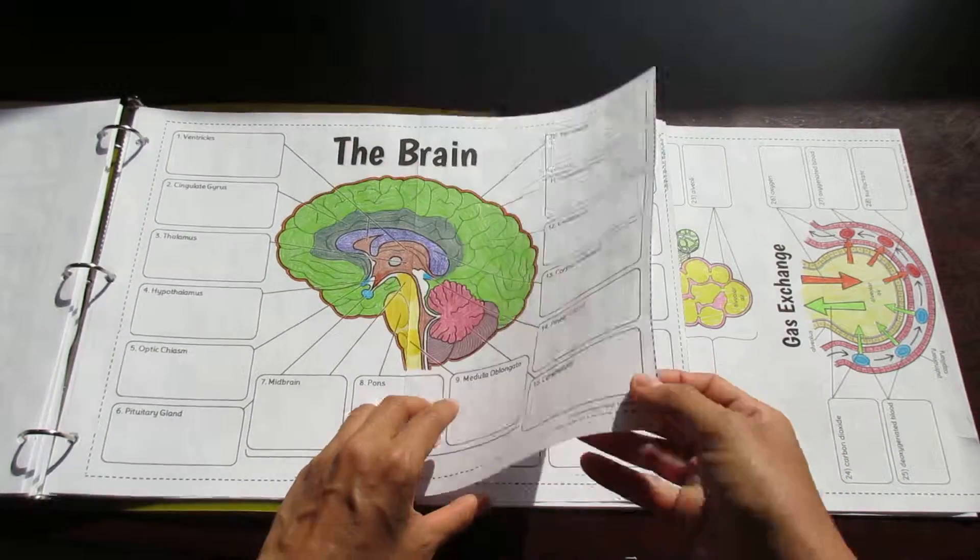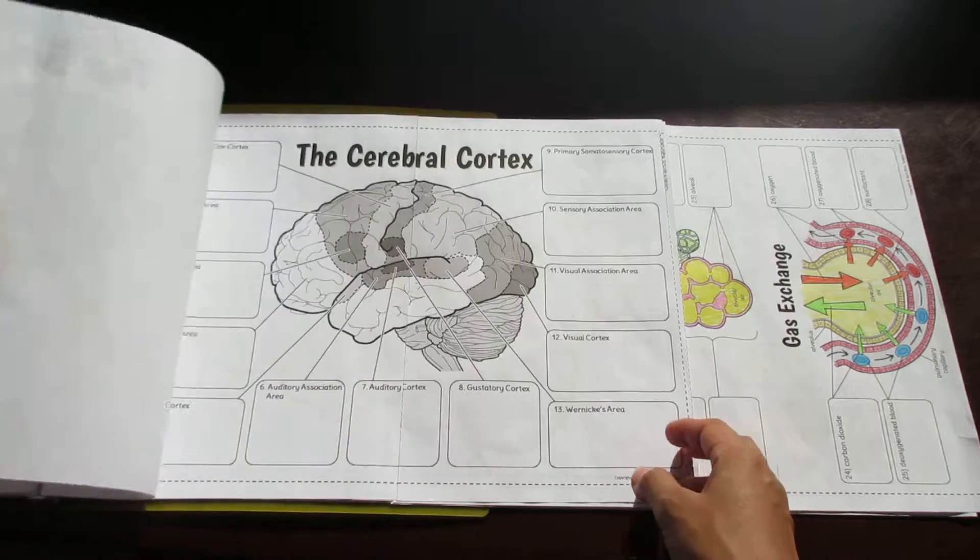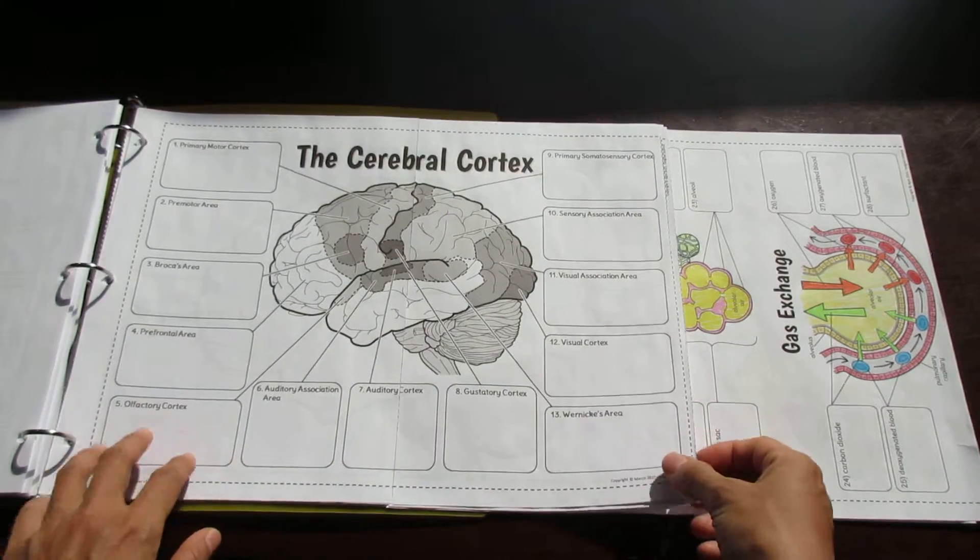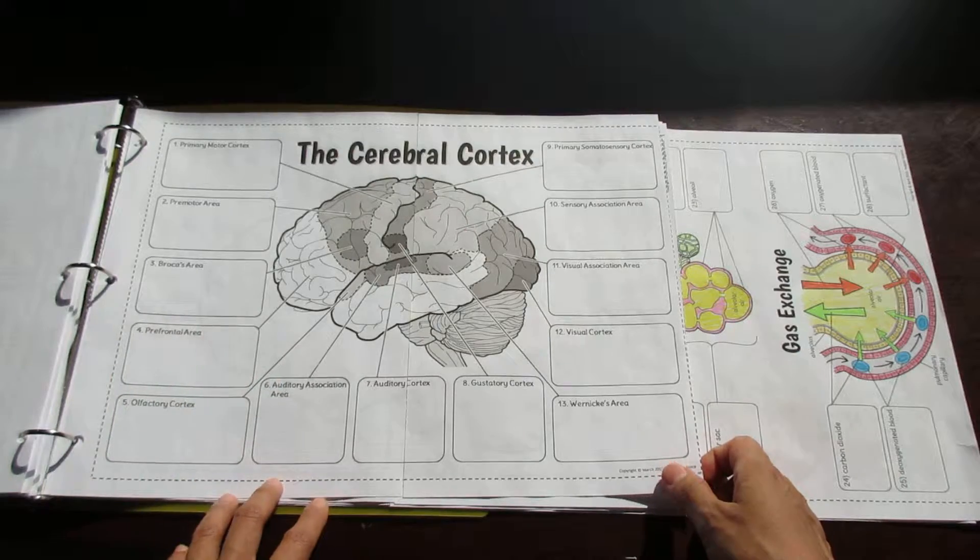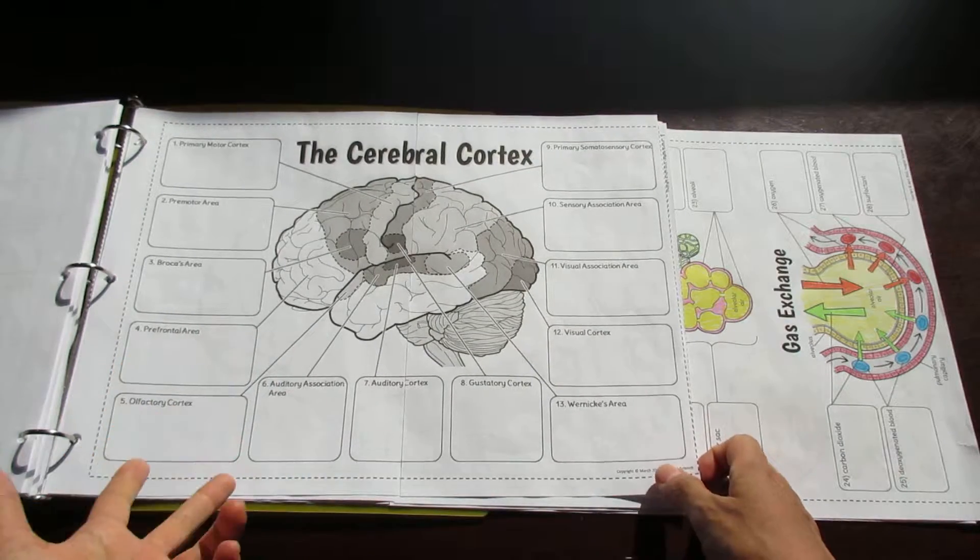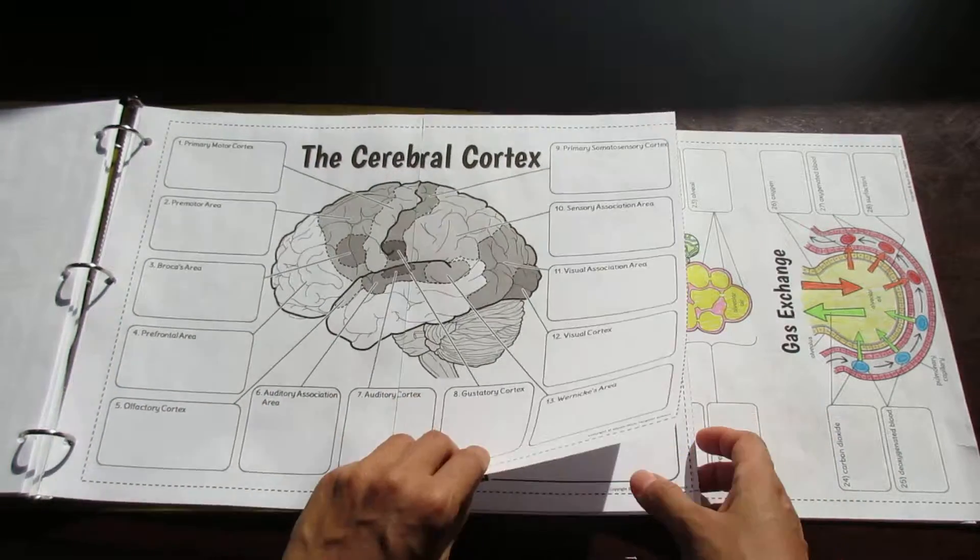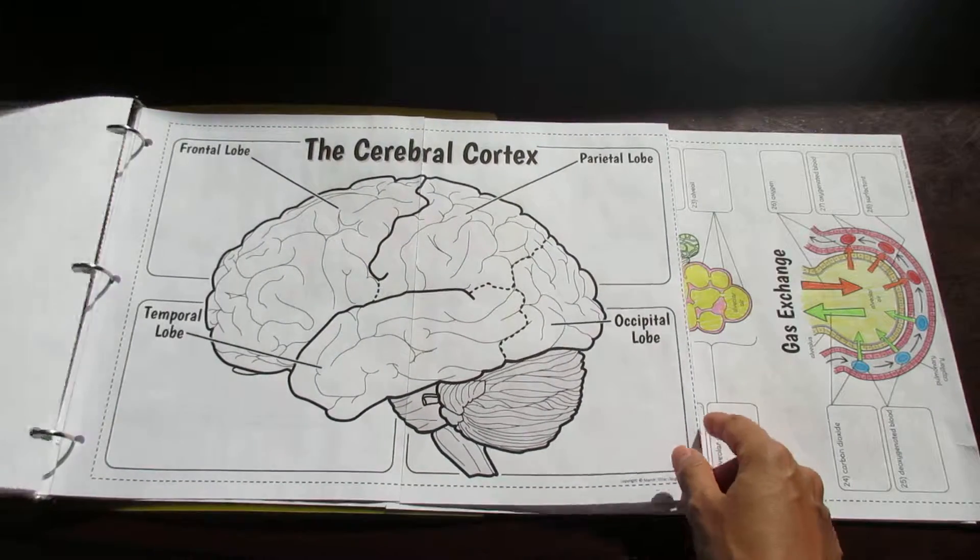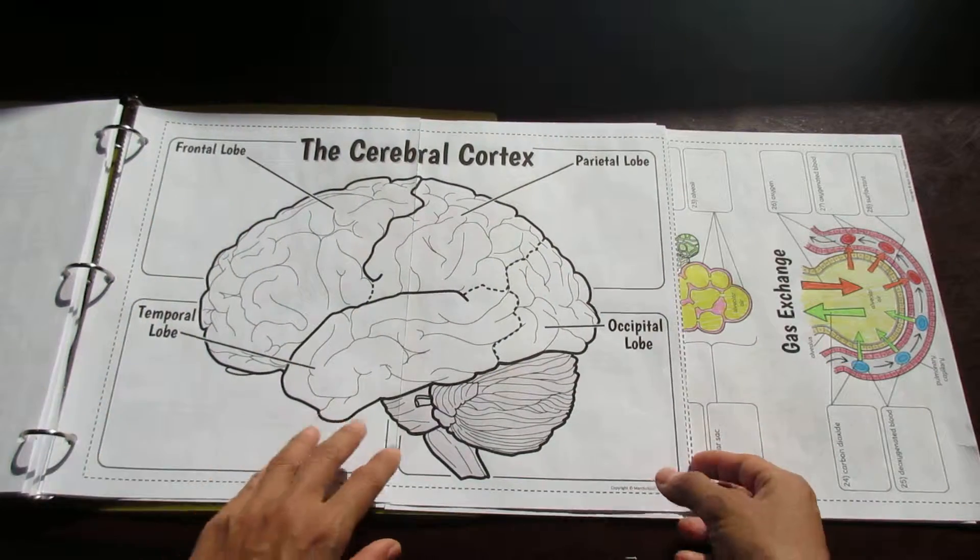Then you have, I didn't color this one but this is the areas of the cortex, the cortical areas of the brain, so Broca's area, Wernicke's area, motor cortex, then you've got just the overview of the four lobes.